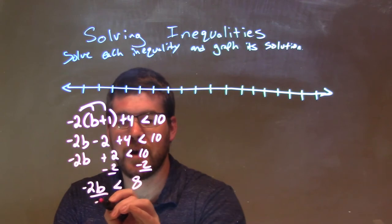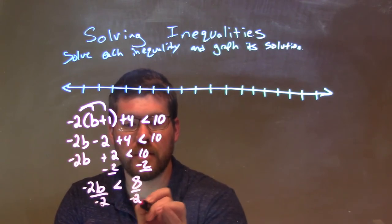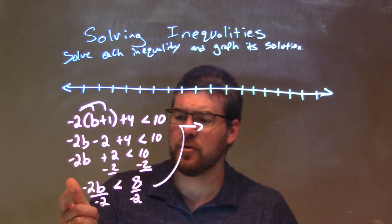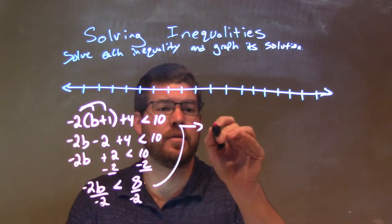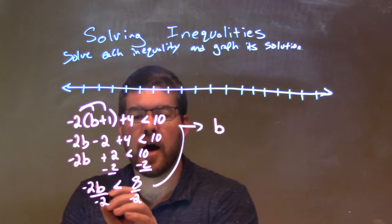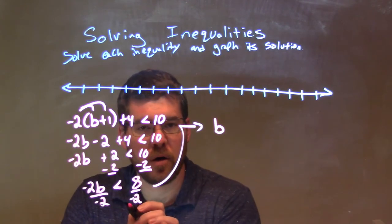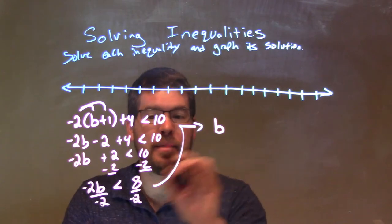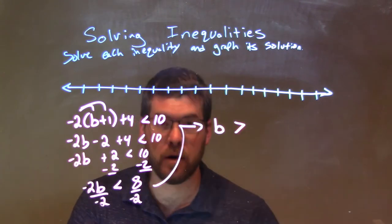From here, I'm going to divide by negative 2 on both sides. And doing so, negative 2b divided by negative 2 is a positive b. We're dividing over this inequality by a negative number, so that less than sign flips to a greater than sign.